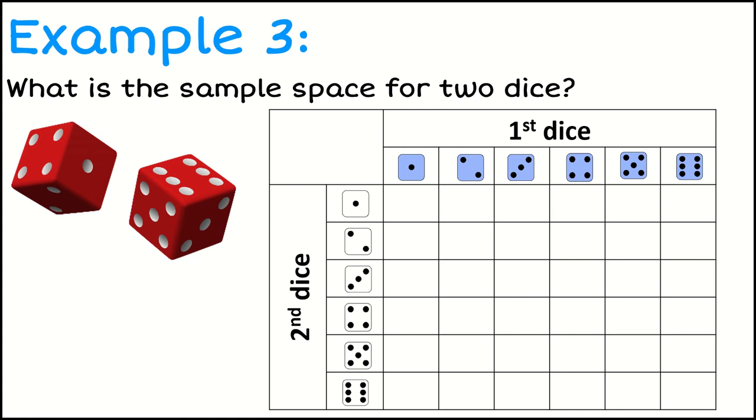What if I'm rolling two dice, however? So you'll notice I've got a table here now, and I've got my first dice up the top, and I've got my second dice down the side. So these are the two things that are going to happen.